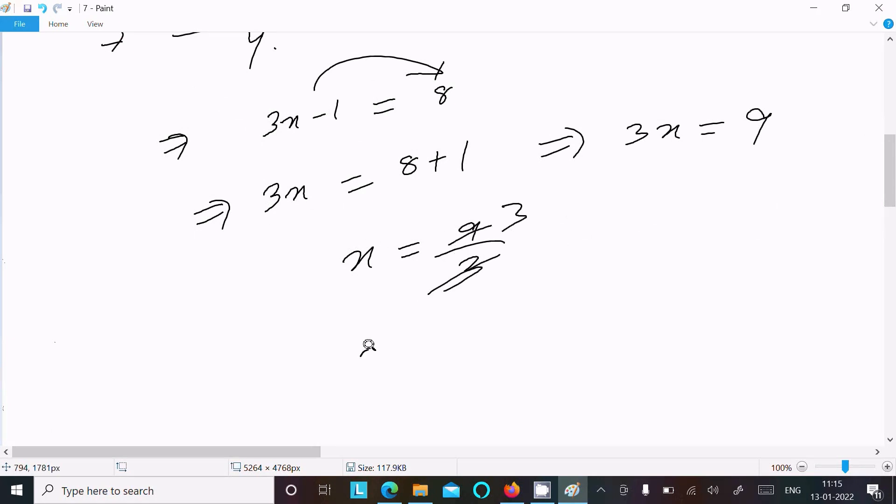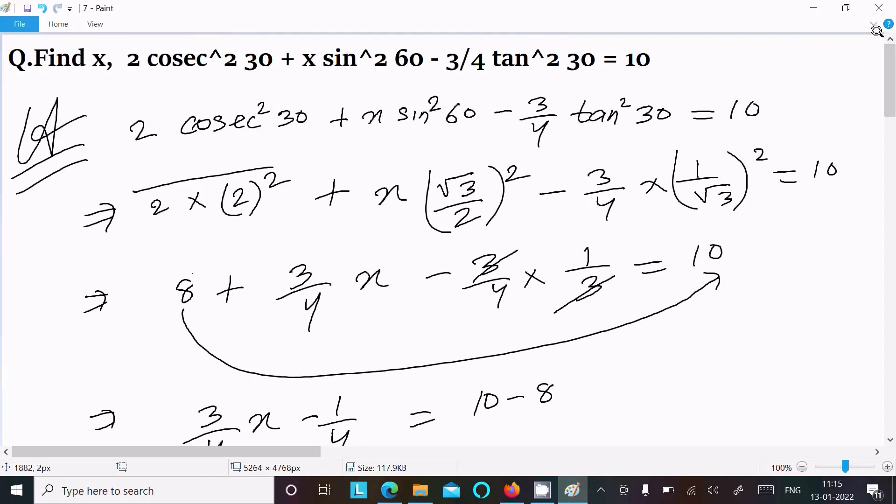Now the x value is 9 divided by 3, so here you can get x value is 3. So 3 is the answer to this question. One more time: put the value, then do the calculation, and you can get the value of x.